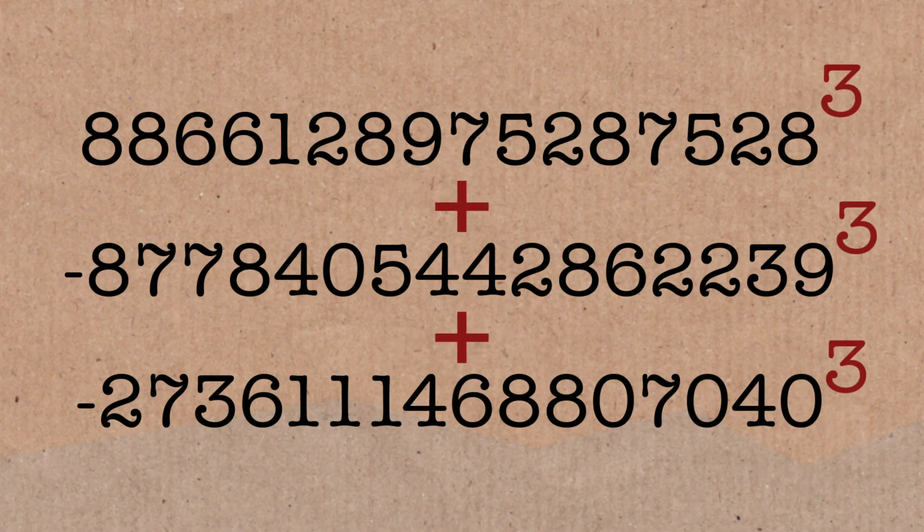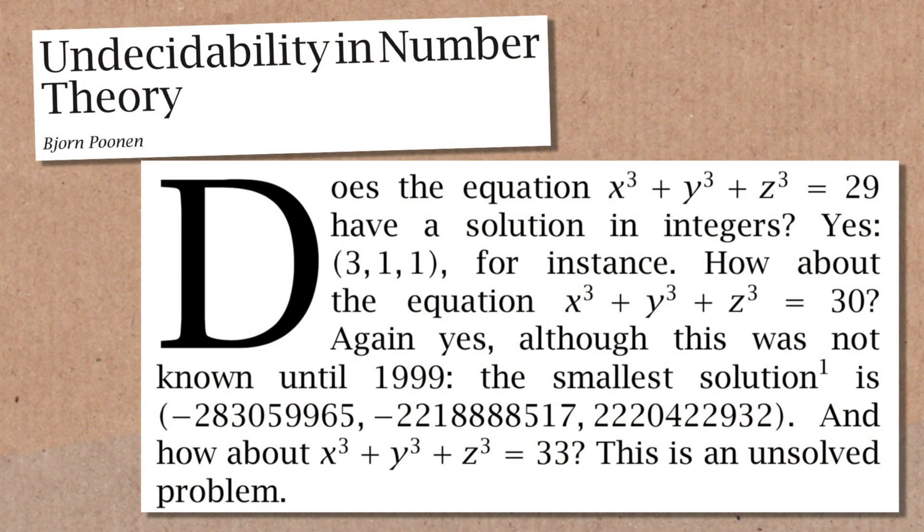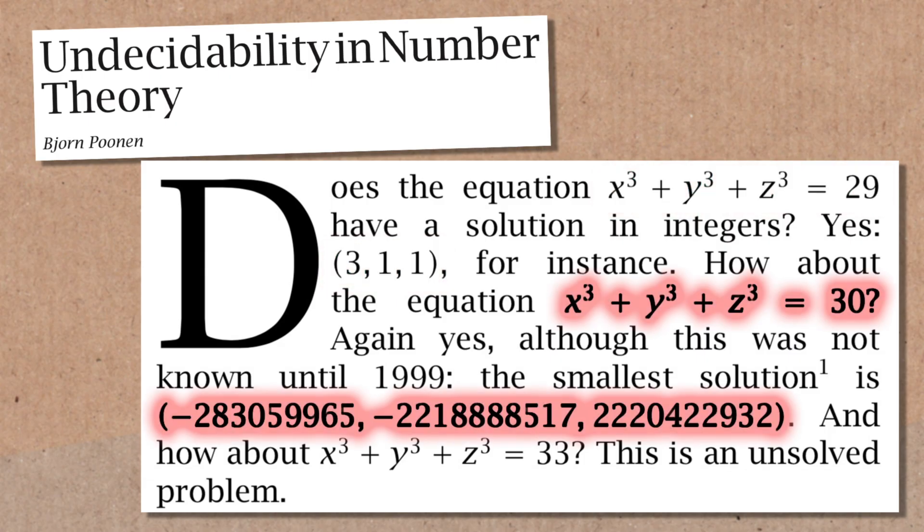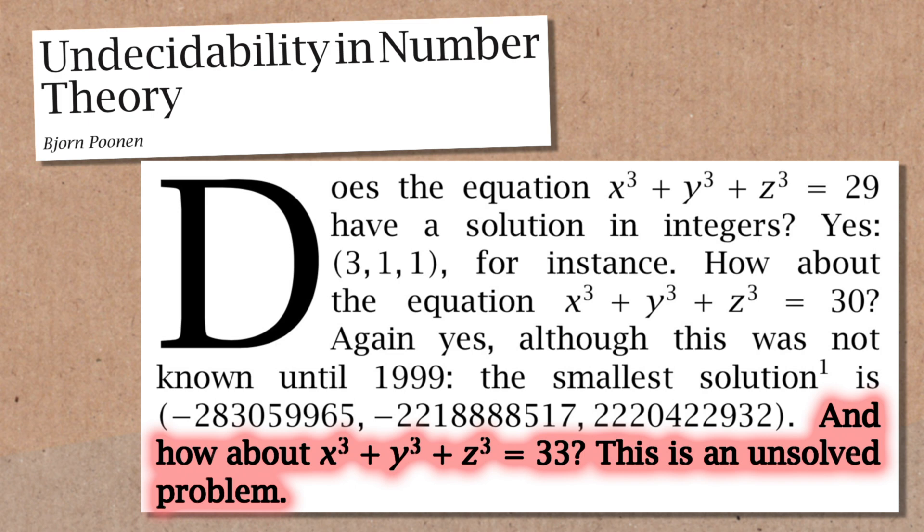We found three integers whose cubes sum to 33. This number was immortalized in a paper by Bjorn Pudin. He pointed out that if you want to solve that problem for the number 29, it's really easy - 29 is 27 plus 1 plus 1. If you move up the number line and ask about 30, we know a solution for that, but the numbers are in the billions. And that was only discovered in 1999.